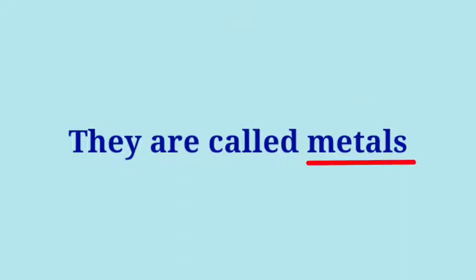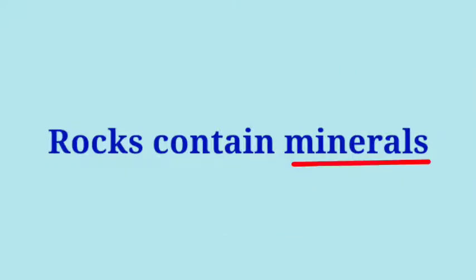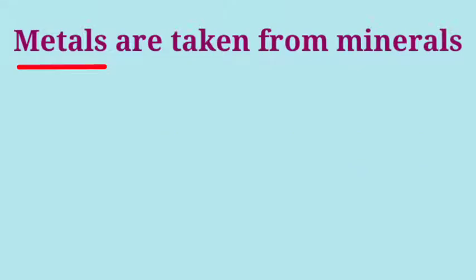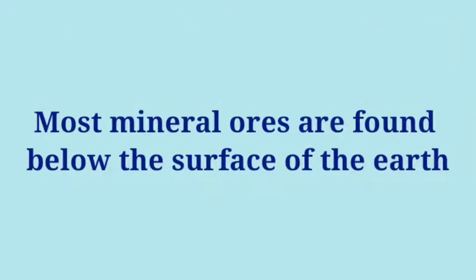These hard materials are called metals. Iron, copper, aluminium, silver, gold — all are metals. Rocks contain minerals, and metals are taken from minerals. A rock containing large amounts of a mineral is called the ore of that mineral. Most mineral ores are found below the surface of the earth.